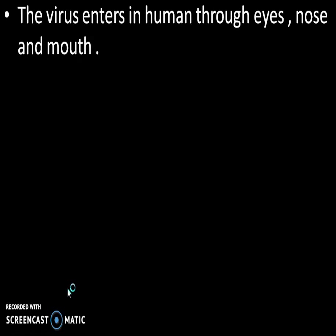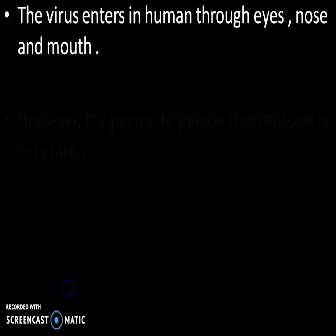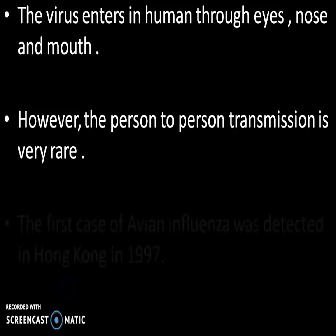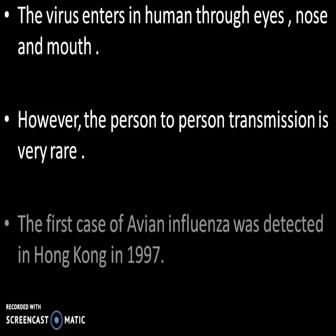The virus enters humans through the eyes, nose, and mouth. However, person-to-person transmission is very rare. The first case of avian influenza was detected in Hong Kong in 1997.